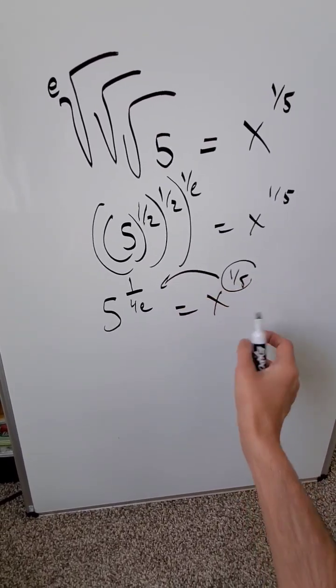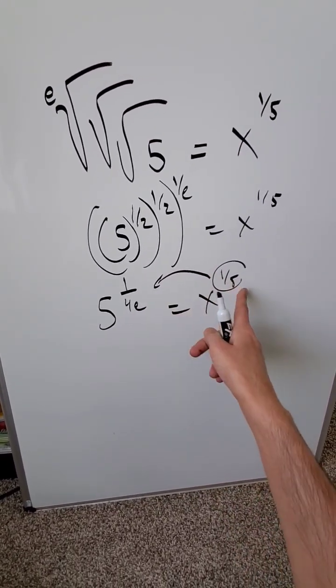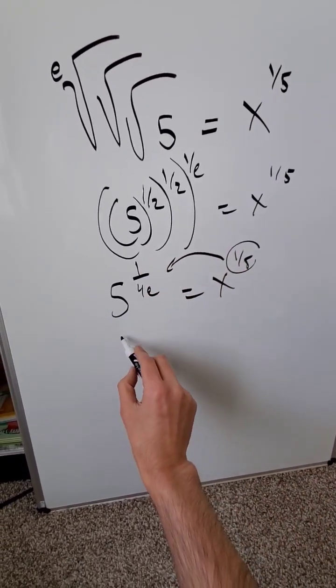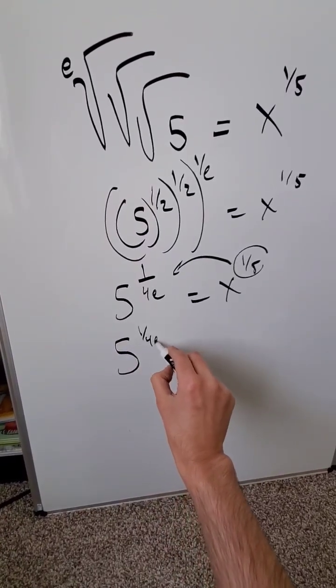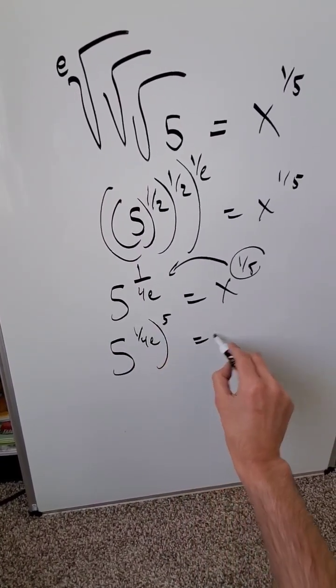Take this exponent and push it on the other side. It will undergo a reciprocal change and it will become a power over here. 5 to the power of 1 over 4e to the power of 5 is equal to x.